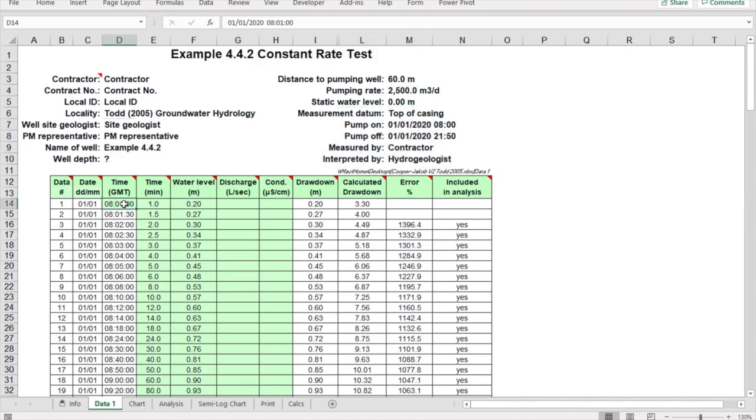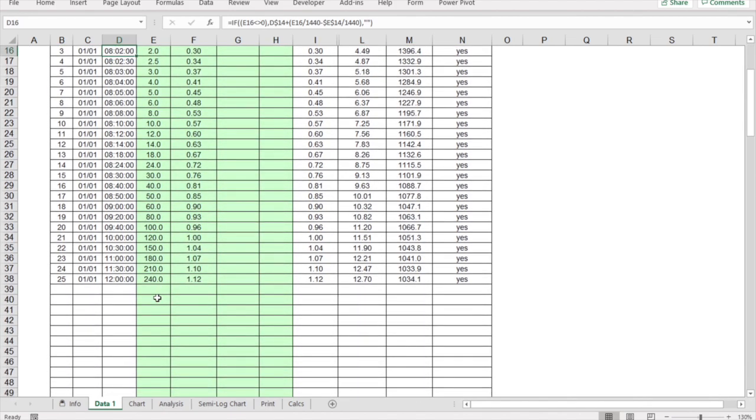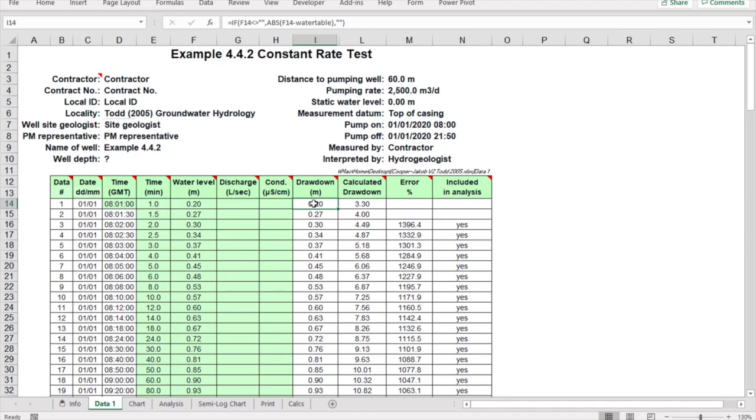What's very important is that here you enter the correct time of your first pumping water level measurement. Afterwards the time here is calculated automatically from this first cell, and also the time here in minutes of your measurements. The drawdown is calculated from our water level and our static water level. In this case, these water levels are already drawdowns, so I've just put in here static water level of zero, but basically that's not normally the case.